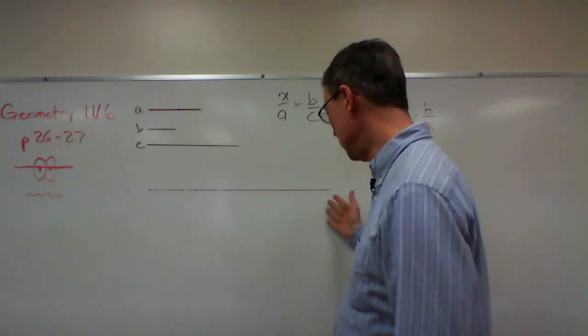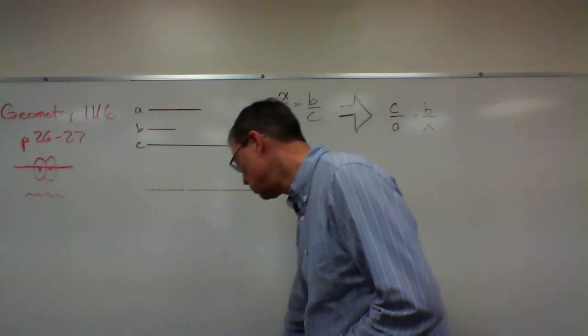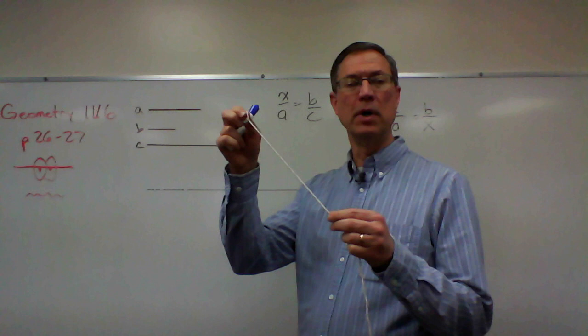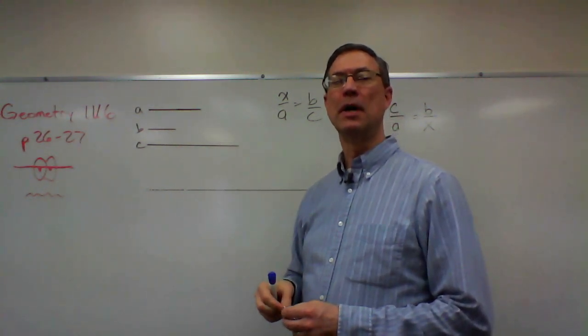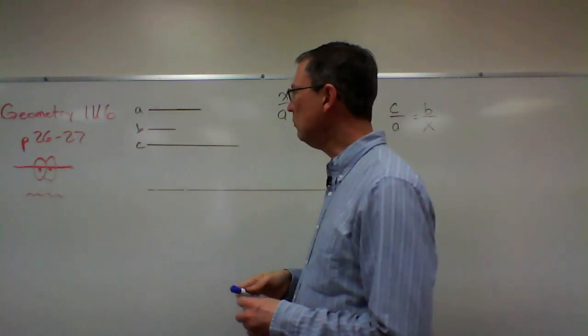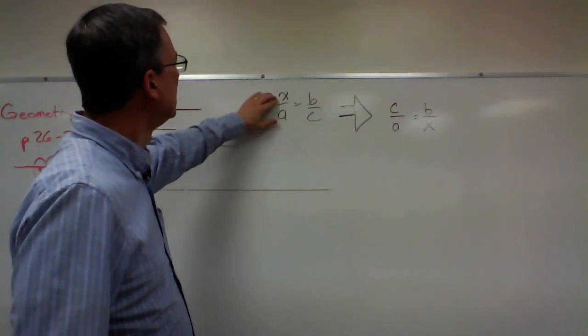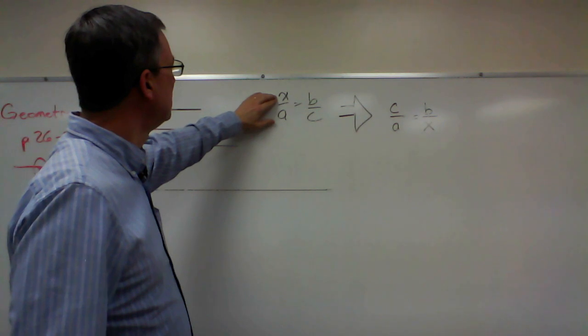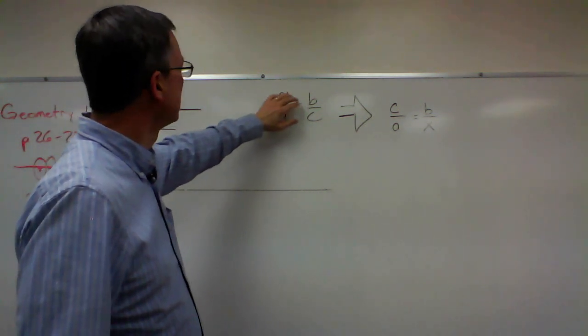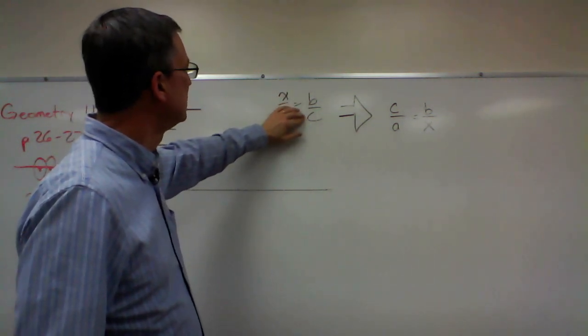Now to do it on the whiteboard, I have to use different tools like a piece of string represents the compass. All right, so the problem tells us we need to draw x and that we want it to be proportional to a just like b is to c.